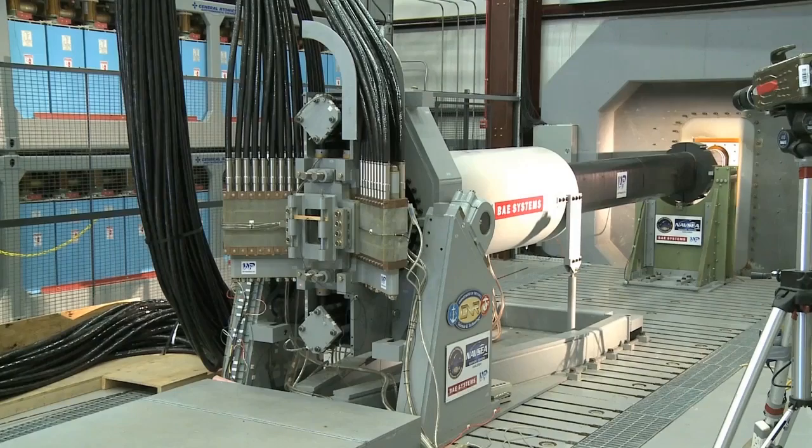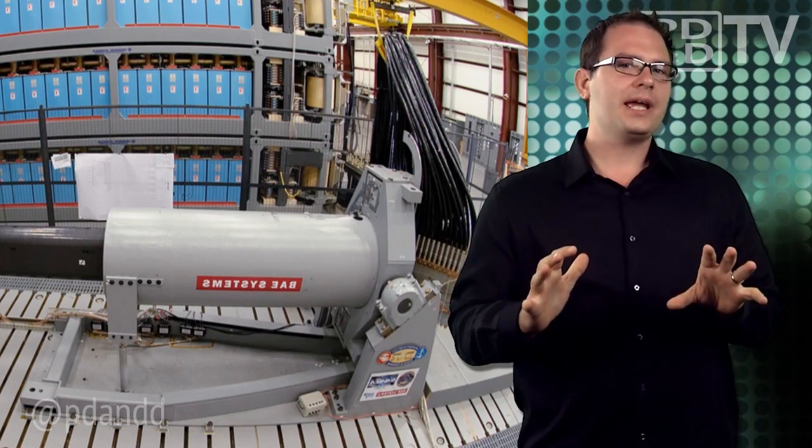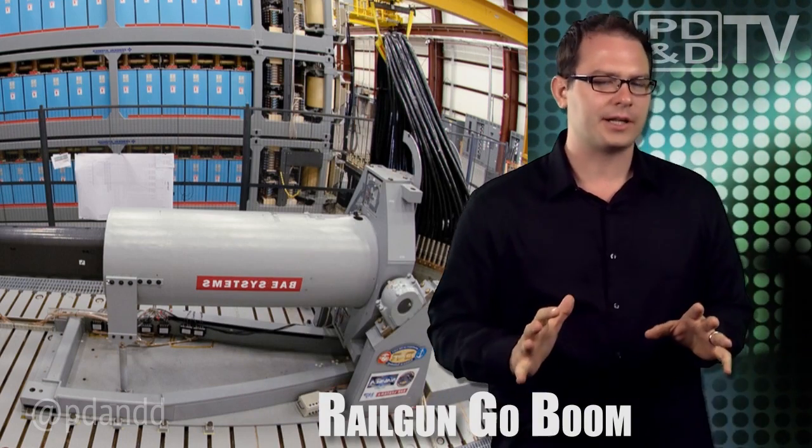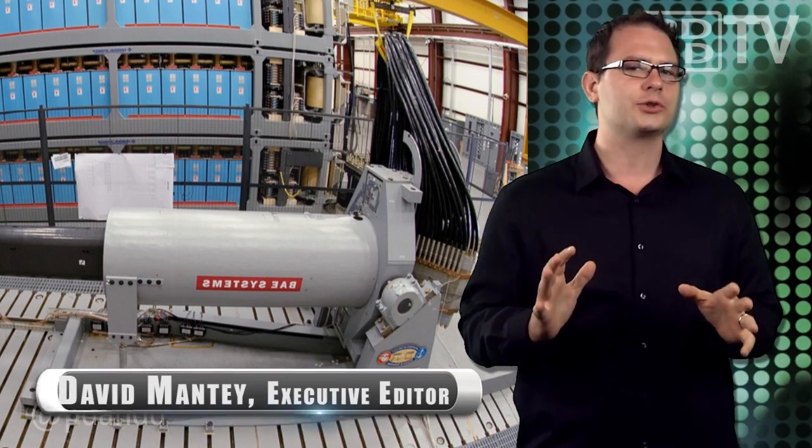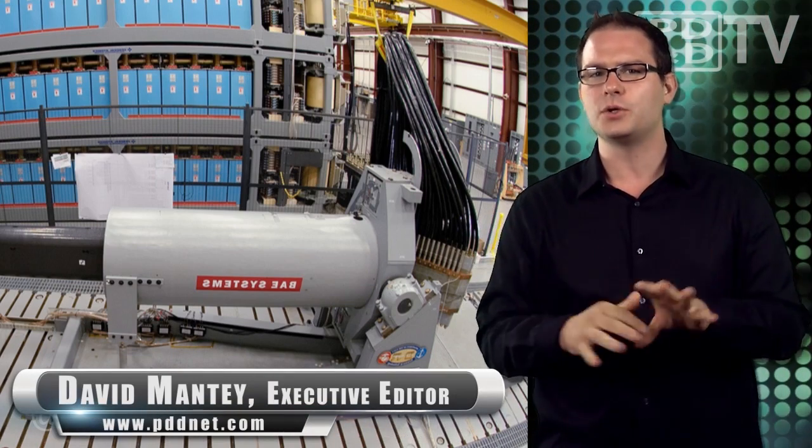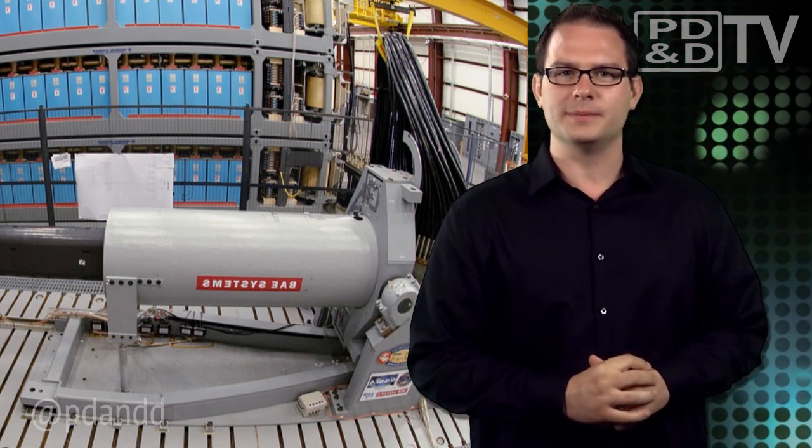Remember the Railgun? Woo! Yeah, baby! BAE Systems was awarded a $34.5 million contract from the Office of Naval Research for further development of the Electromagnetic Railgun under Phase II of the Navy's Innovative Naval Prototype Program. If you don't remember the Railgun from last year, let's kick a few more cobwebs.